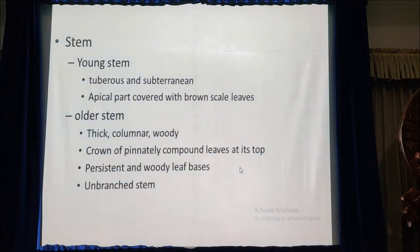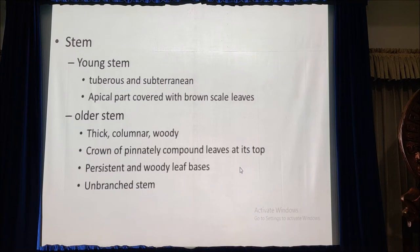The young stem of Cycas is tuberous and subterranean, and the apical part is covered with brown scale leaves. The older stem is thick, columnar and woody with a crown of pinnately compound leaves at its top. The stem is covered with persistent and woody leaf bases. Usually, the stem is unbranched.